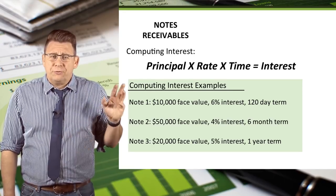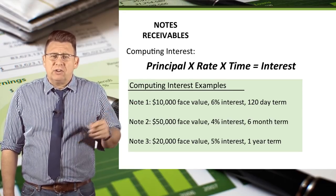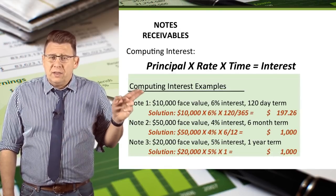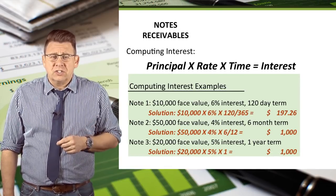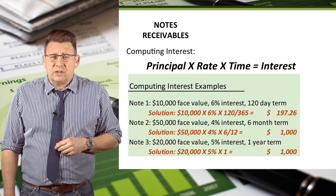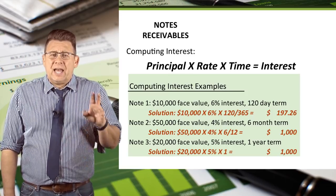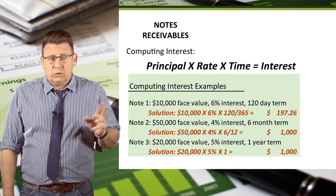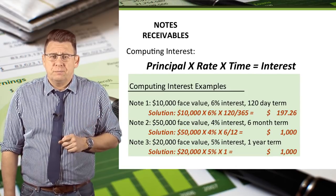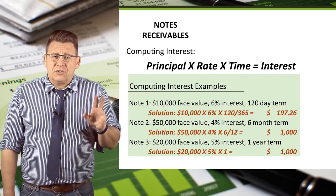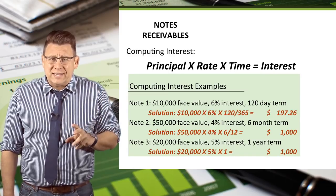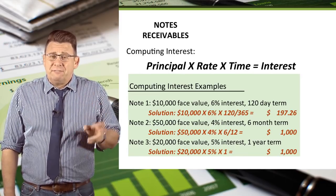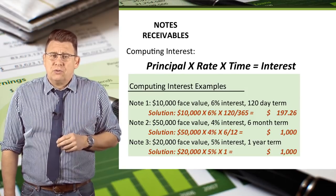We have three notes here; let's calculate the interest for each of them. For note one, the interest is $10,000 times 6% times 120/365, which equals $197. You can see that the term of 120 days is converted into years by dividing 120 by 365.